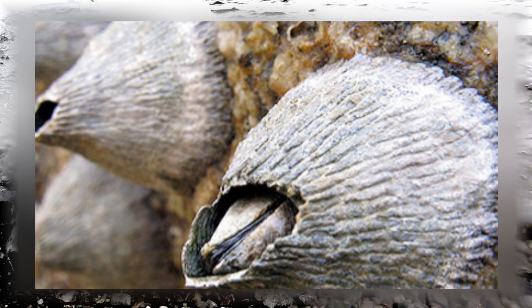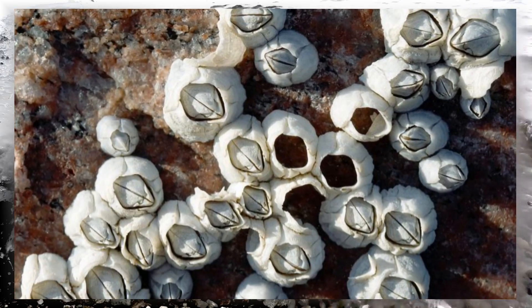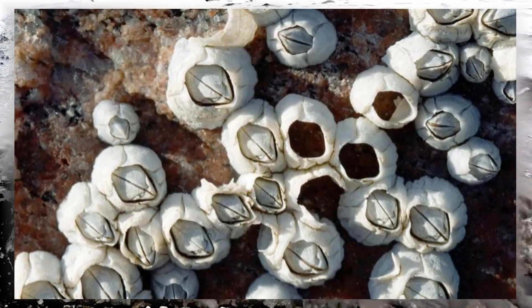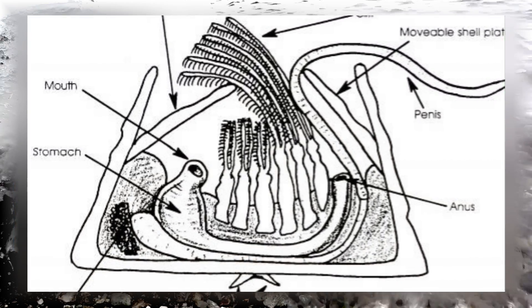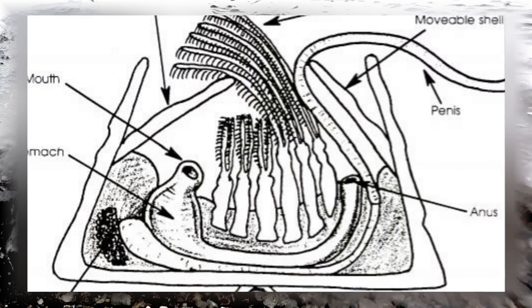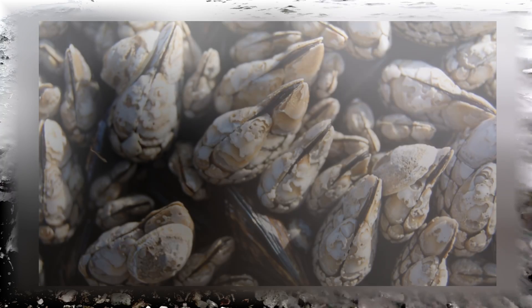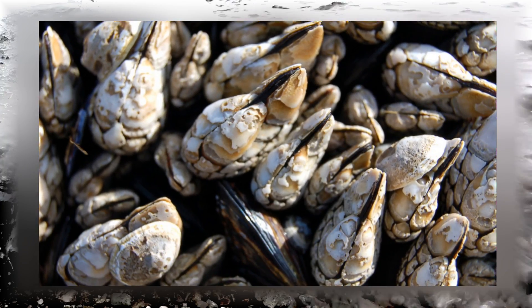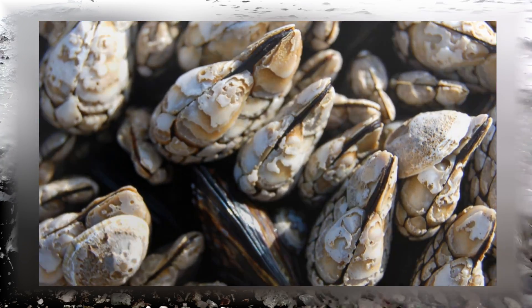Free-living barnacles are attached to hard surfaces by cement glands that form the base of the first pair of antennae. In effect, the animal is fixed upside down by means of its forehead. They are covered with several plates of calcium carbonate.